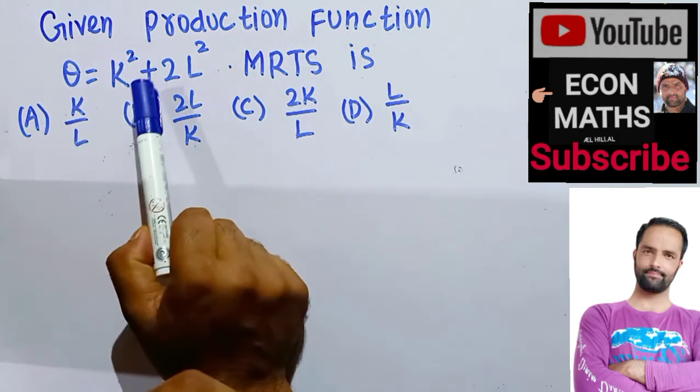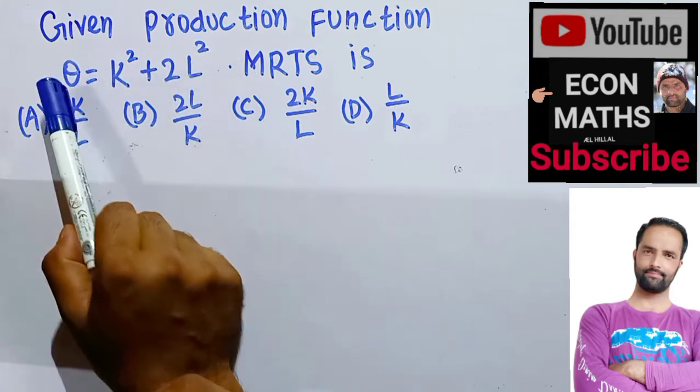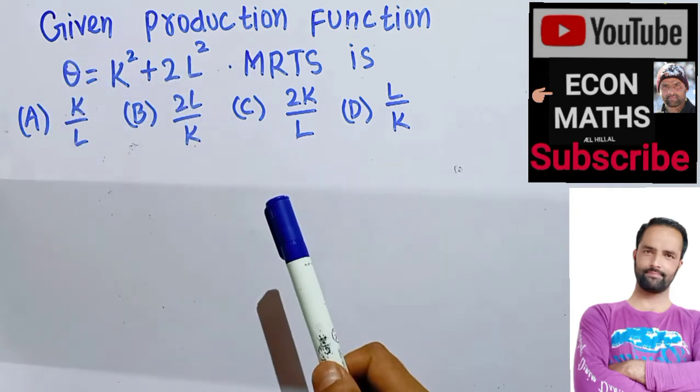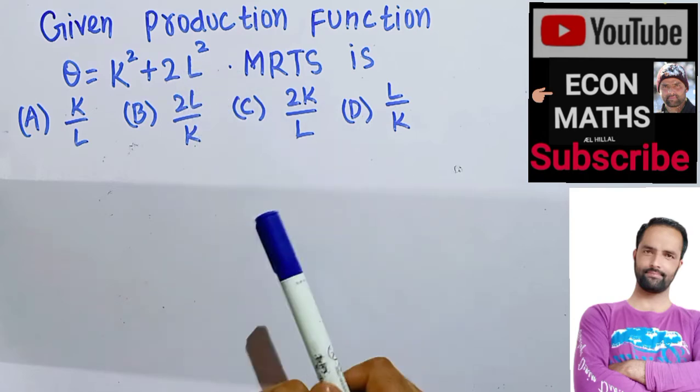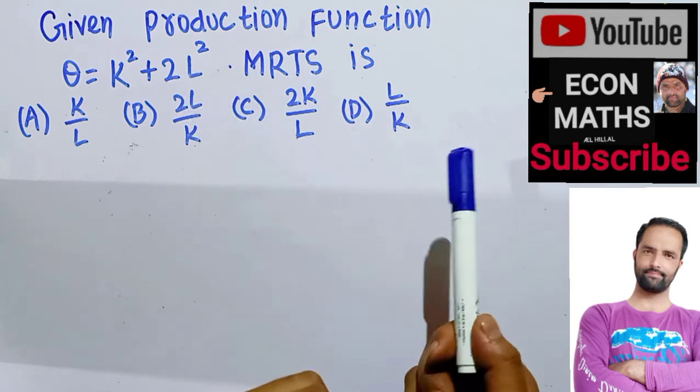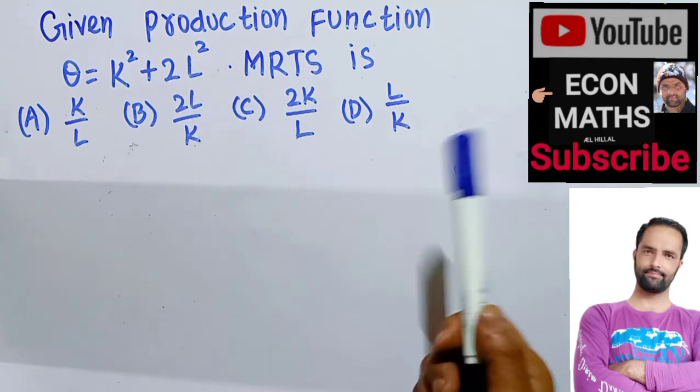The question is: given the production function Q = K² + 2L², where Q is output, K denotes the units of capital employed, and L denotes the units of labor employed.